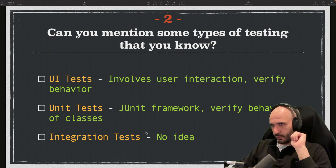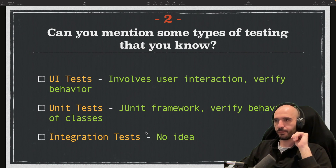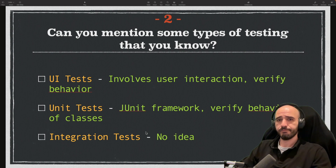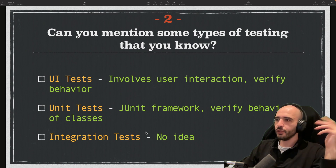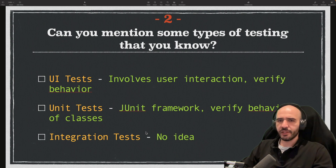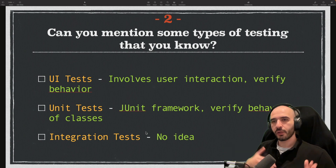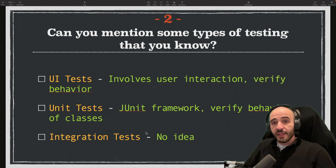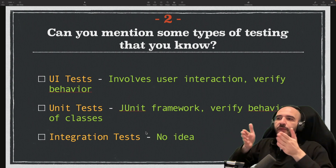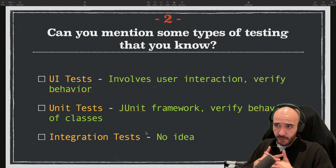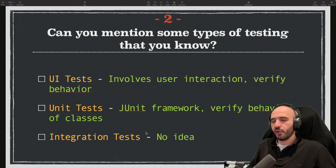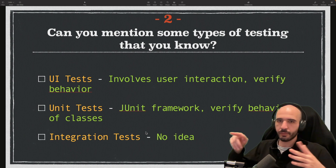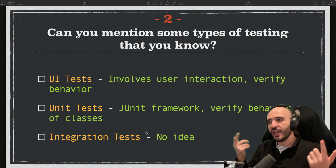Question two: can you mention some types of testing? There's UI tests, unit tests, and integration tests. UI tests involve user interaction — testing if a button triggers a function when clicked, verifying behavior like 'is clicked', 'is displayed', or 'is not displayed'. Unit tests are based on the JUnit framework; they verify the behavior of actual code classes, not UI — whether a method outputs what it should based on a given input.